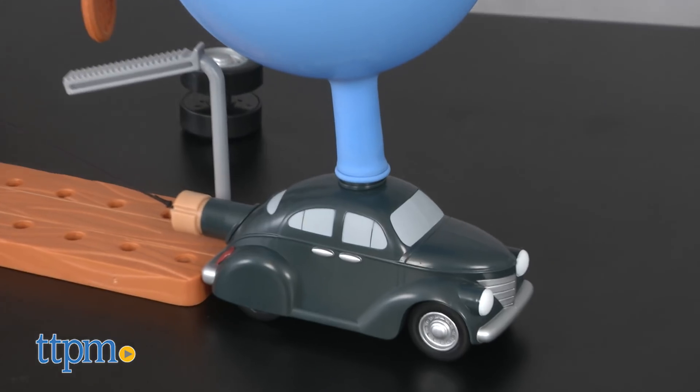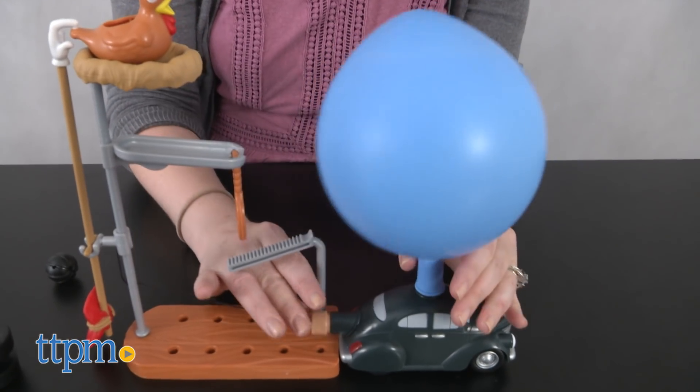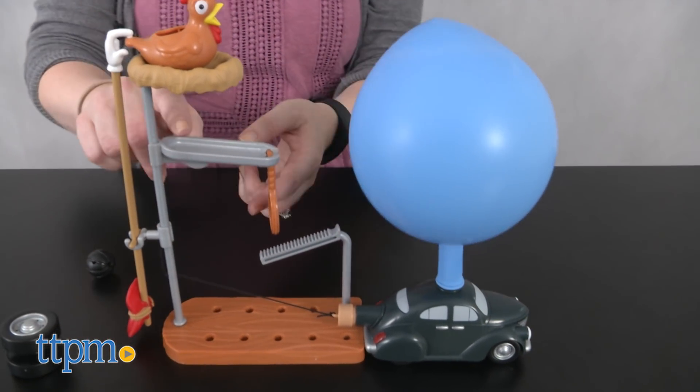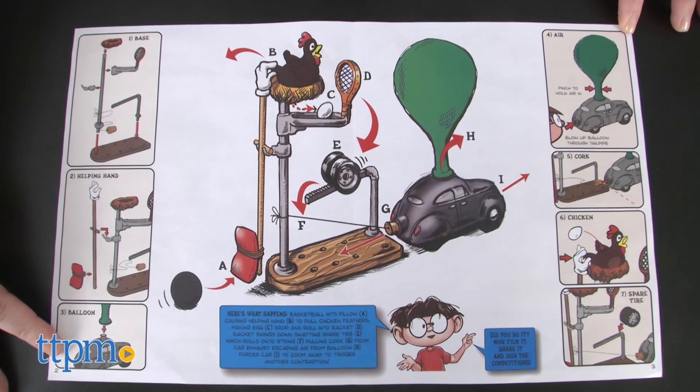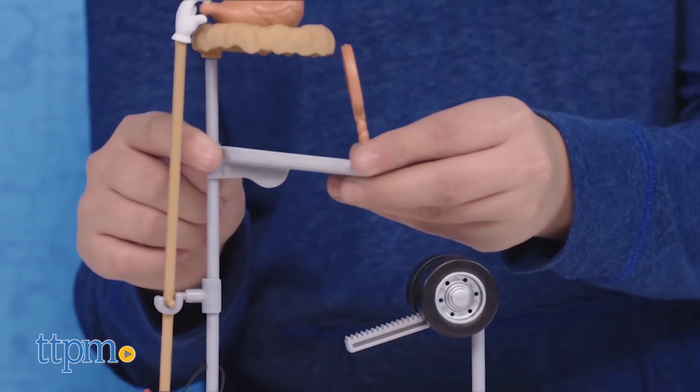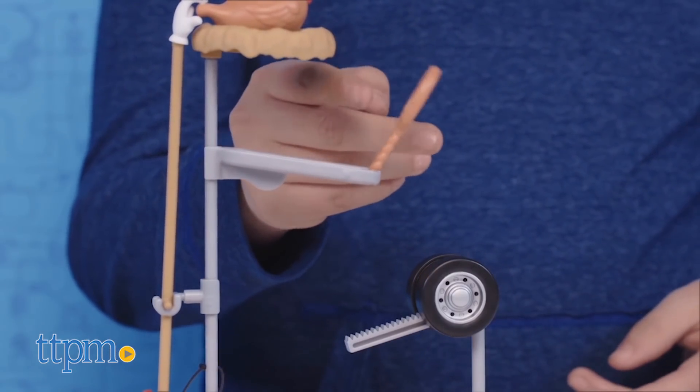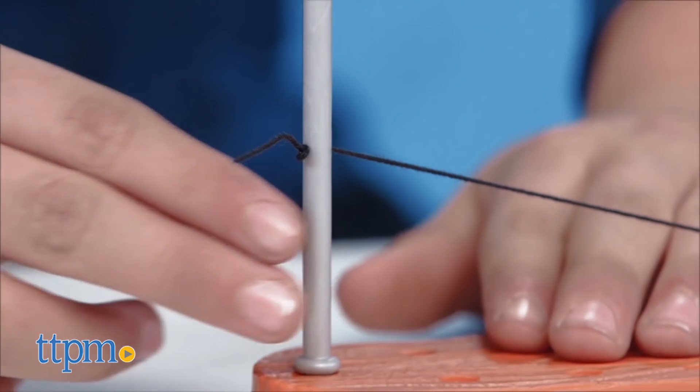But that's not what actually happens, and that's because kids must tinker with the machine to figure out how to make it work, and unfortunately the instructions don't really tell you that. Maybe kids have to adjust the position of the pole or change the height of the racket. There's a how-to video online with more tips and tricks to help kids figure it out.